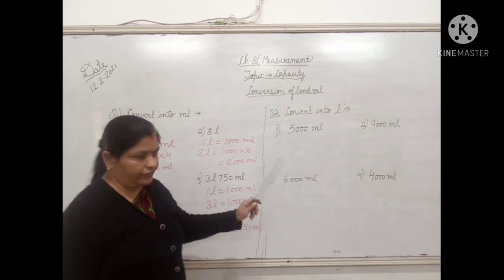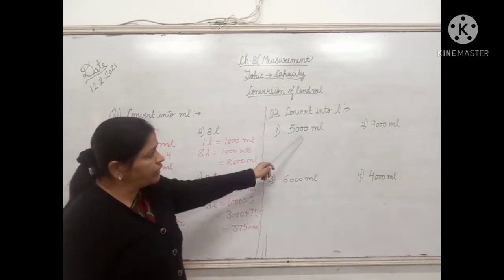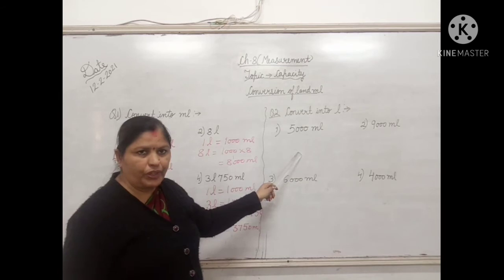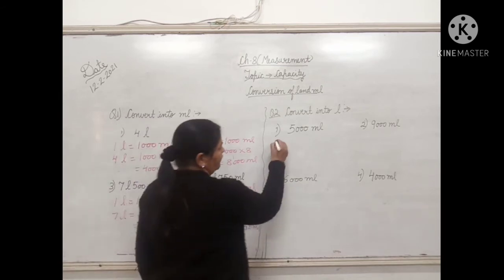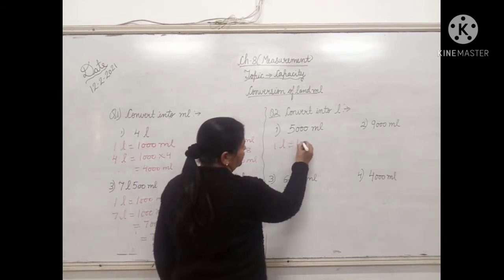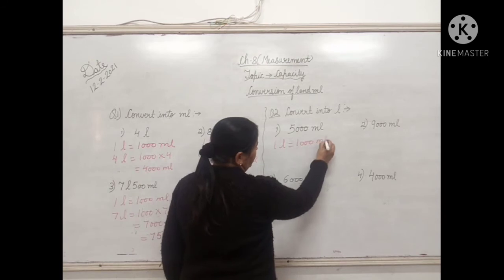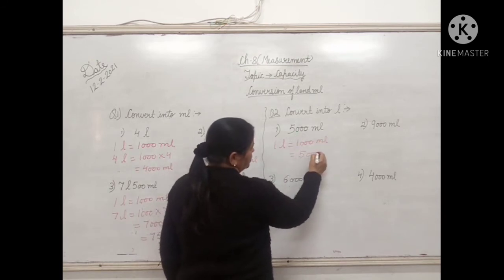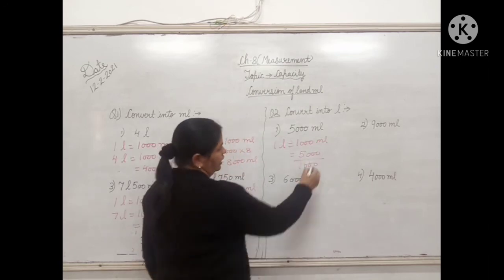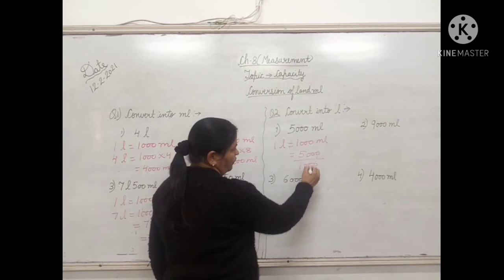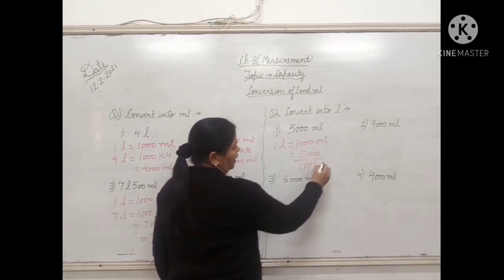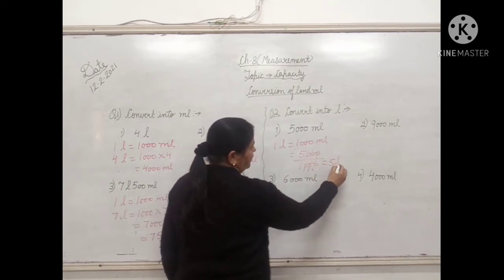Now the next question is convert into liter. Here smaller units are changing into bigger units, so we will do division. Again write the formula: 1 liter equals 1000 milliliter. So 5000 milliliter has been given. Write down 5000 upon 1000. Cut the zeros and the answer is 5 liter.